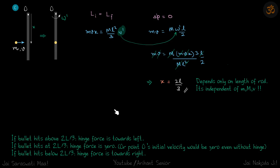So on the rod particle system, net force – net impulse – is towards right, so it will increase the momentum. So that's what I've written here, let's quickly read: if bullet hits above 2l/3, hinge force is towards left. If bullet hits at 2l/3, hinge force is zero, or point O' initial velocity would be zero even without hinge. So you can imagine, right? If it hits at this distance x equal to 2l/3, this point momentarily will be at rest even without the hinge. That's why even if the hinge is present, it won't contribute to any impulse, and that's why the momentum will remain unchanged.